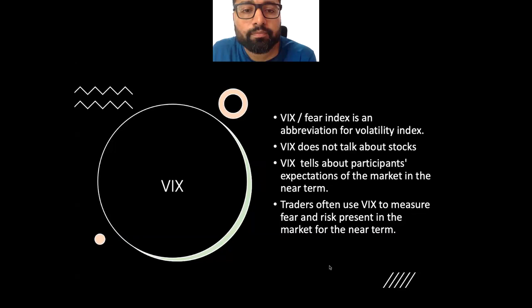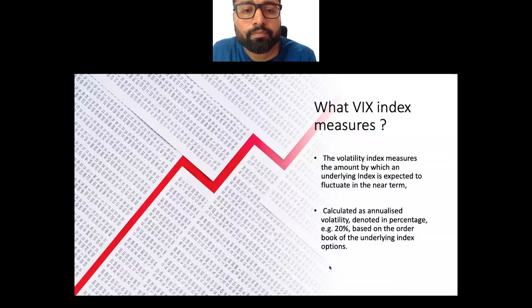There are three markets in India: the cash market, the options market, and the futures market. The options market shows higher sales volume compared to the cash and futures markets. The VIX index takes into consideration the options market, because the options market is a more sentimental market. Investors have the opportunity to hedge through the options market, so VIX is prepared on the basis of option prices.